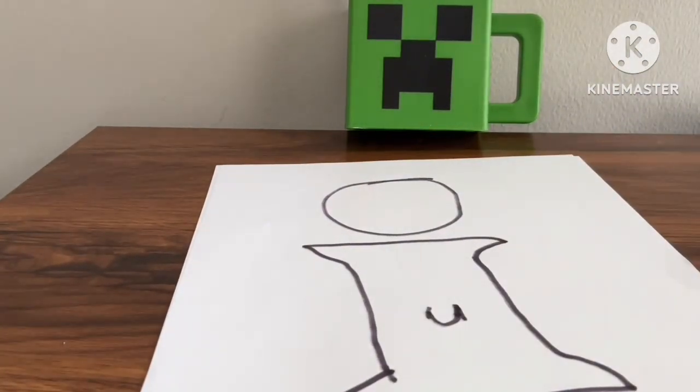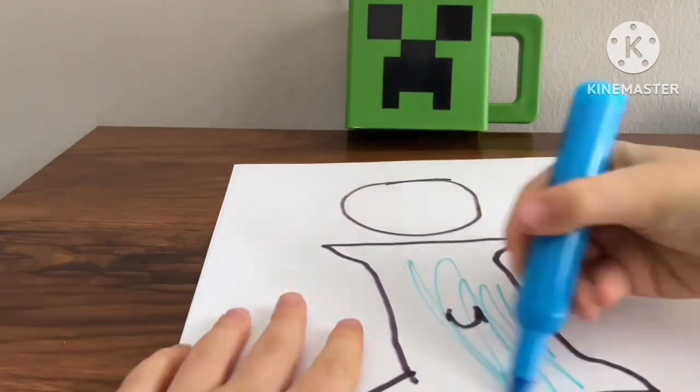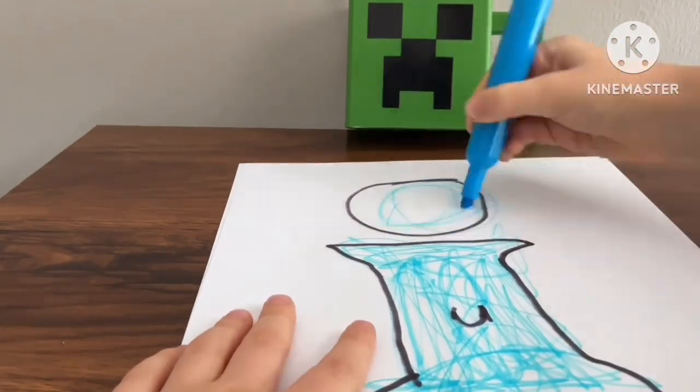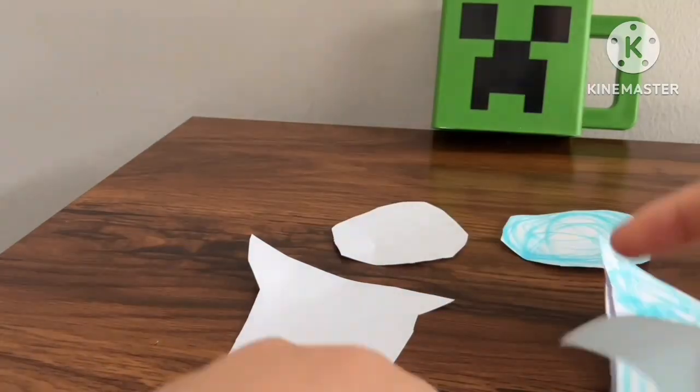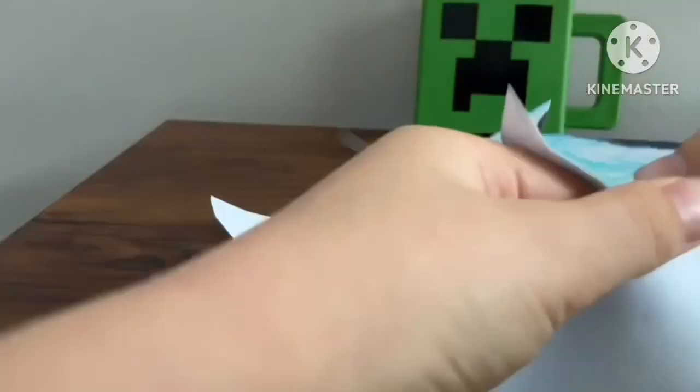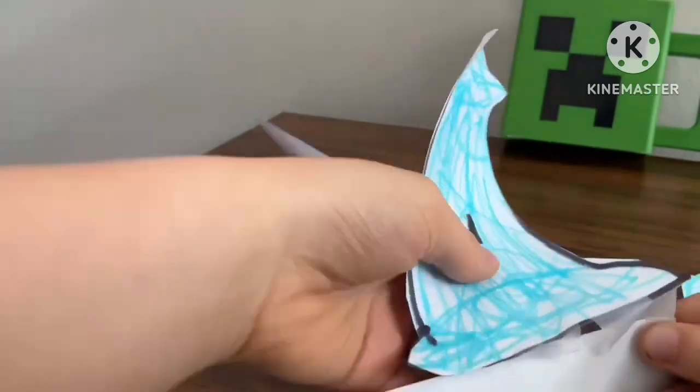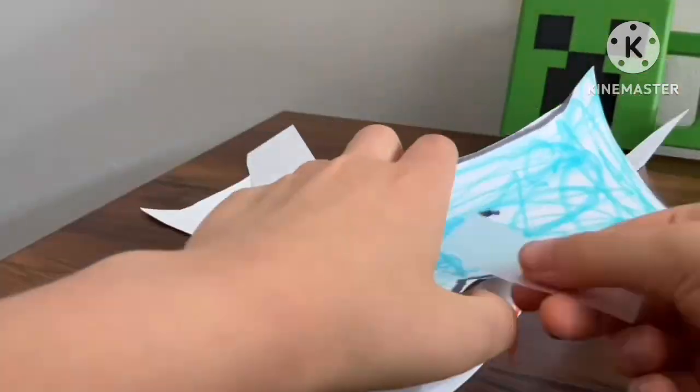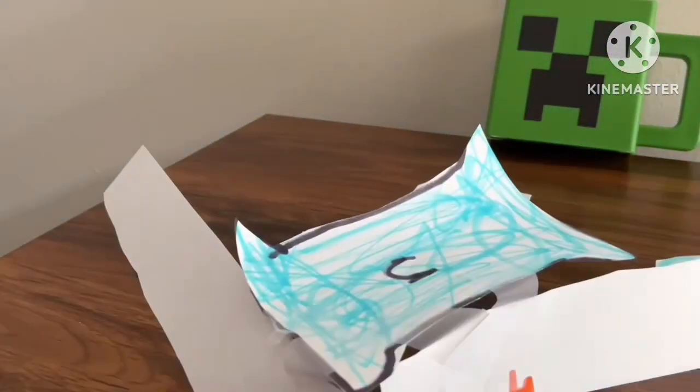Today we're making a paper craft Creeper's eye with flimsy paper. I just cut them out and fold them in to make it 3D, fold the next one in, and put a lot of tape in it.